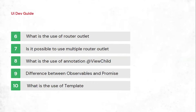The next question is about the use of router-outlet. They may ask: if I remove the router-outlet, will navigation still work? Another counter question involves multiple router outlets — for example, if you have two or three modules, how can you create a router-outlet per module? You can achieve this by passing a name parameter inside the router, which enables multiple router outlets.